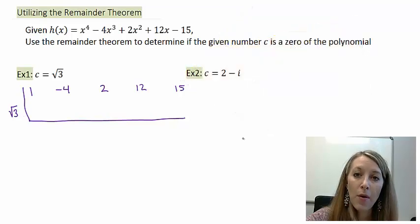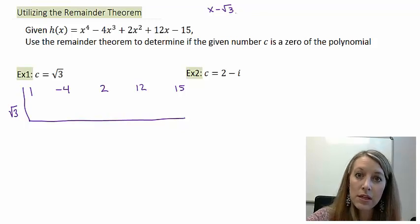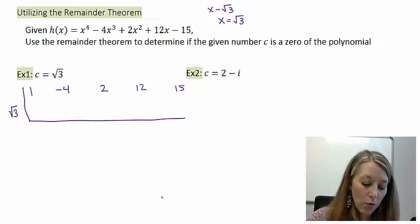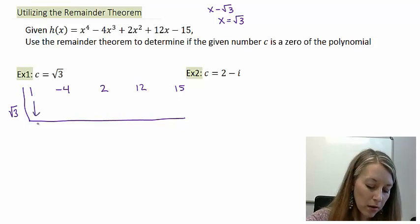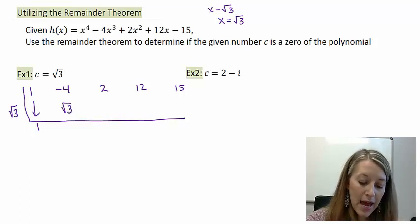Remember, if the problem gives you the factor rather than the divisor, then you need to use the zero of the factor, meaning set it equal to zero and solve for the variable. So we have our divisor of √3. Now let's work through the synthetic division. We bring down 1, we multiply.